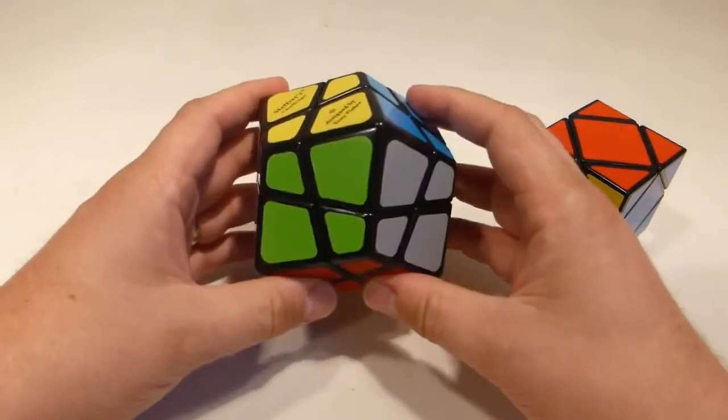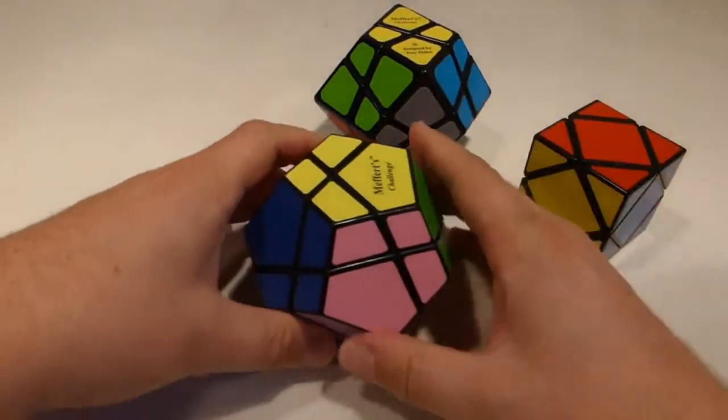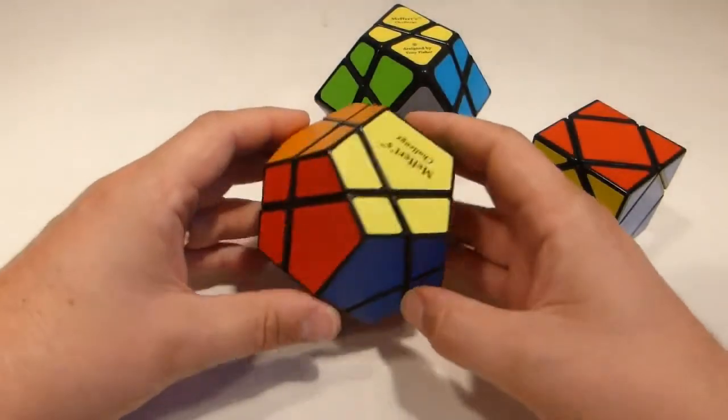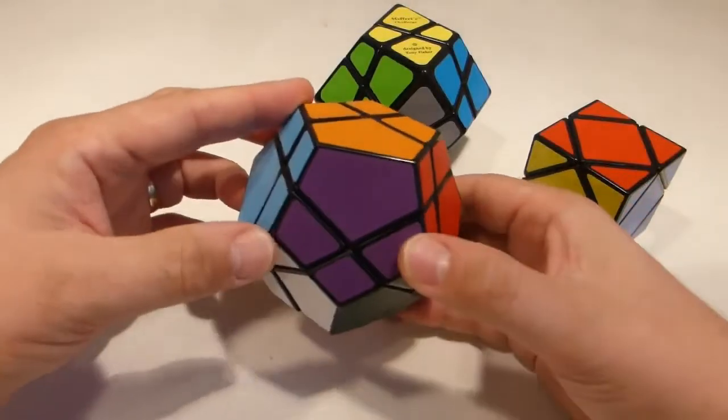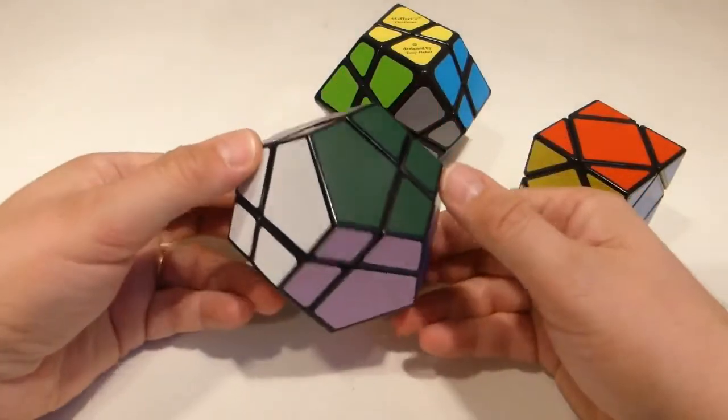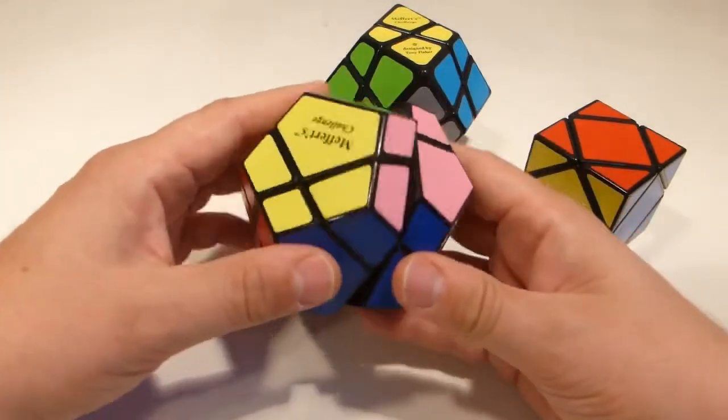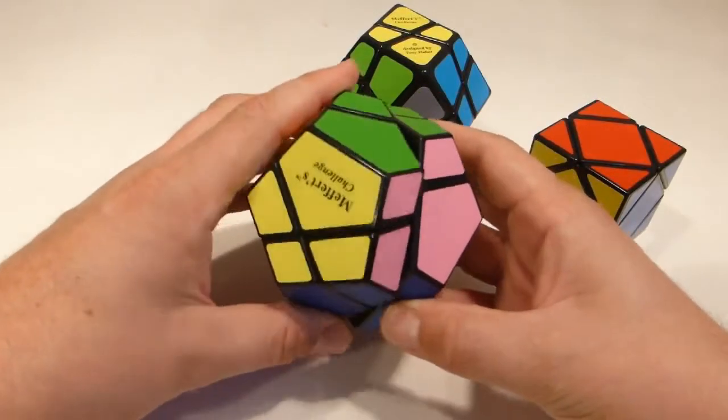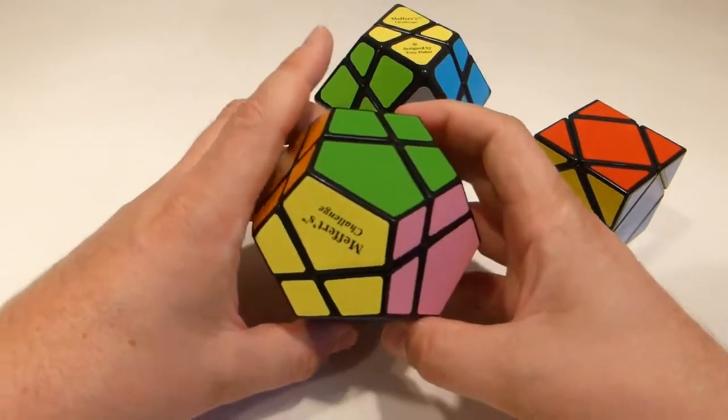So that's the Kite Skewb. What about the Skewb Ultimate? Well again, where are my corners? I've got corners here, here, here, here—there's eight of them still. And then I've got these pieces, these large pieces. Again, you can see that turns half the puzzle. The large pieces here are not centers, they're not corners. What the heck are they? Well, I'll just call them edges.